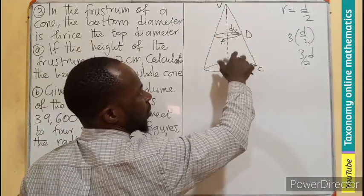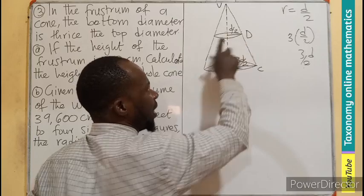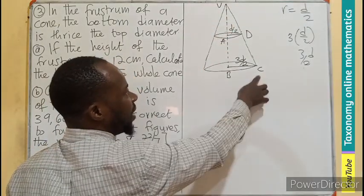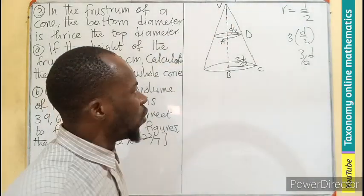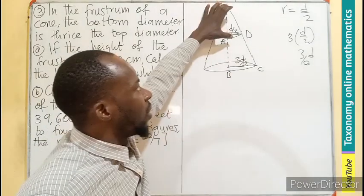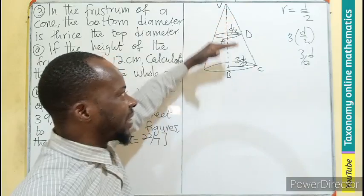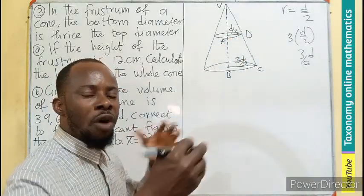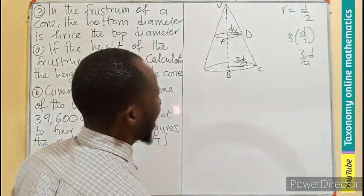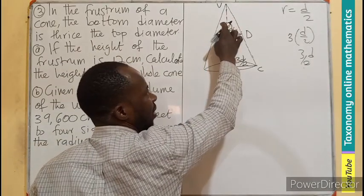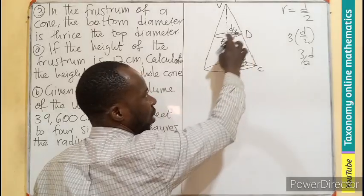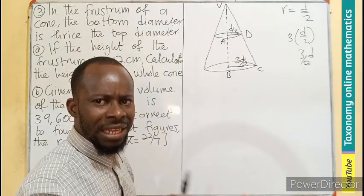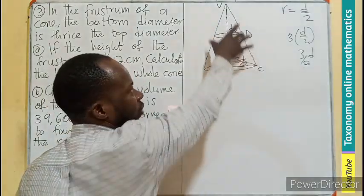If we look at this triangle VAD, it's a triangle in the smaller cone. Looking at VBC, it also forms a triangle, which are similar triangles. This triangle is similar to this because it has been extended to produce this. This is a smaller one, this is a large one, so they are similar. We can find the ratio of their size to be the same. If I know what is here divided by here, it should be the same as here divided by here.